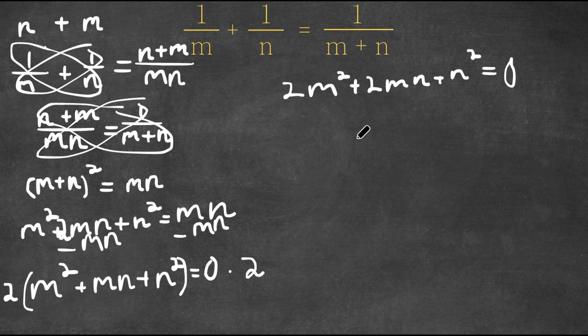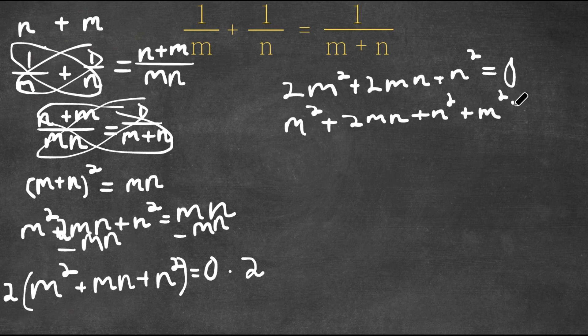Now if we expand this a little, we could convert this to m squared plus 2 m n plus n squared plus m squared plus n squared. And now this is equal to 0.